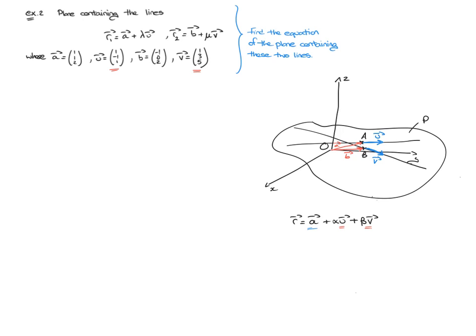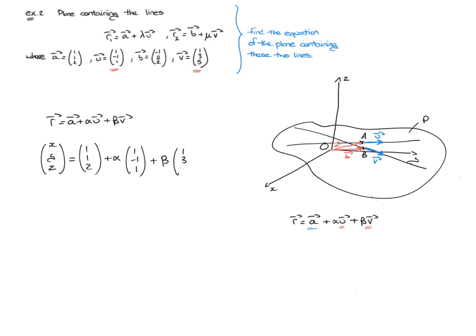So we can go right ahead and write a vector equation of this plane as R equals A plus alpha U plus beta V. In component form: X, Y, Z equals one, one, two, plus alpha times vector U — so that's one, negative one, one — plus beta times vector V — that's one, three, five.